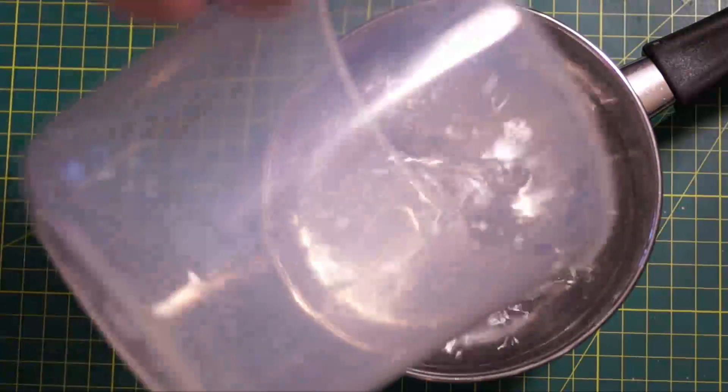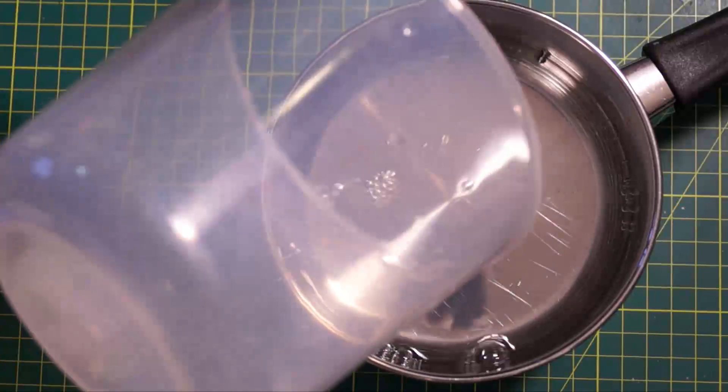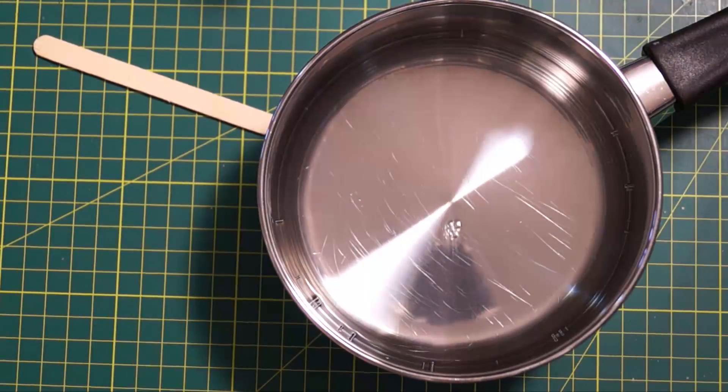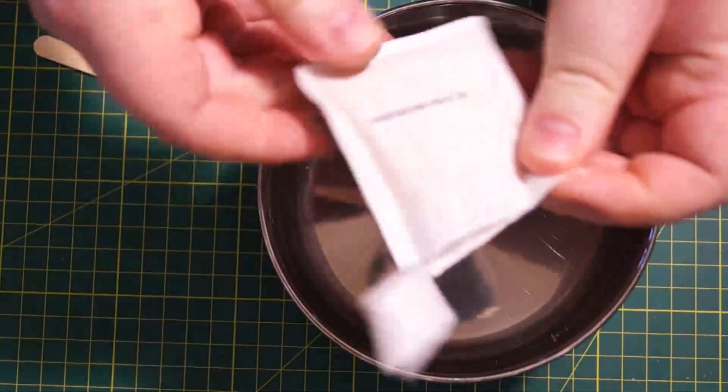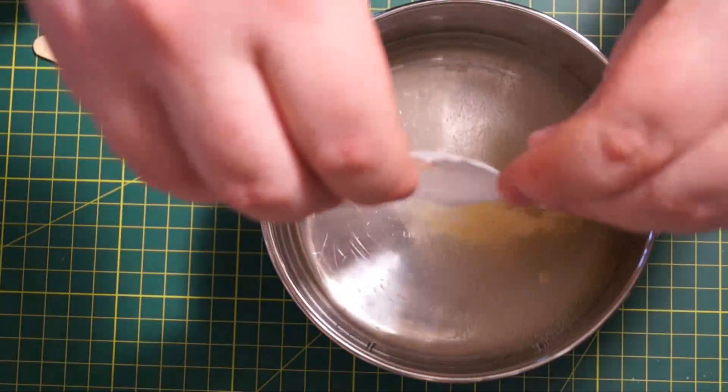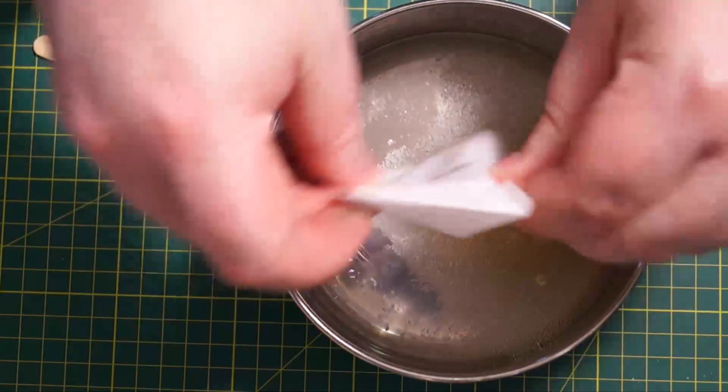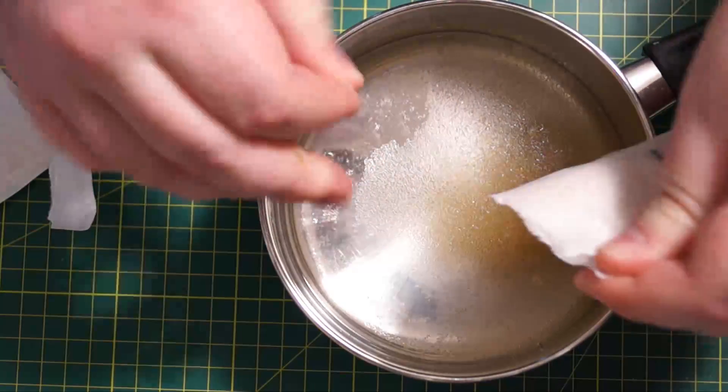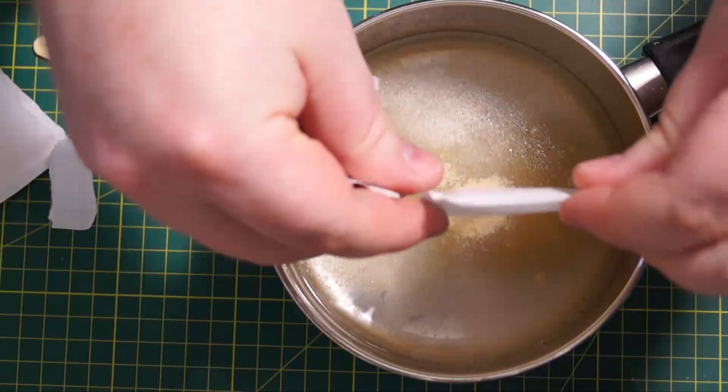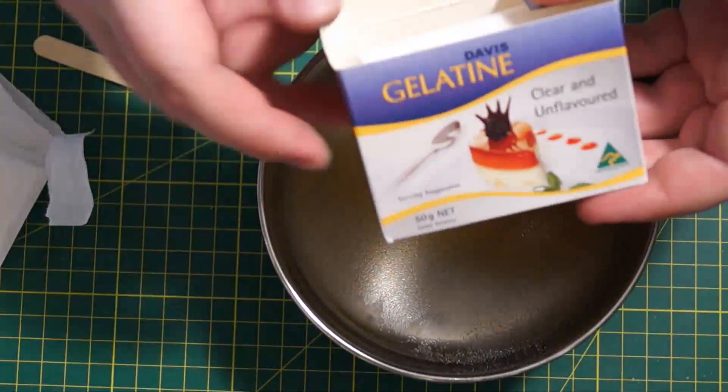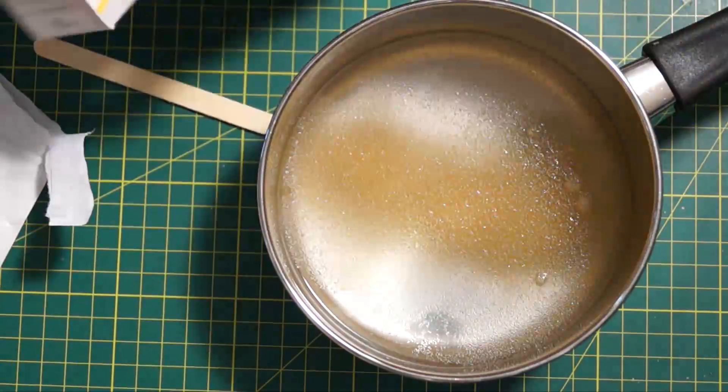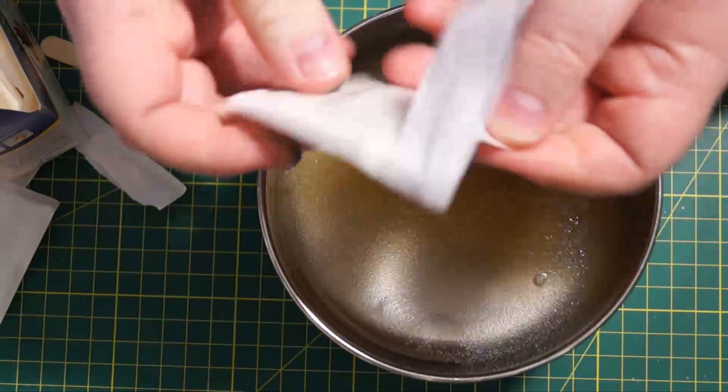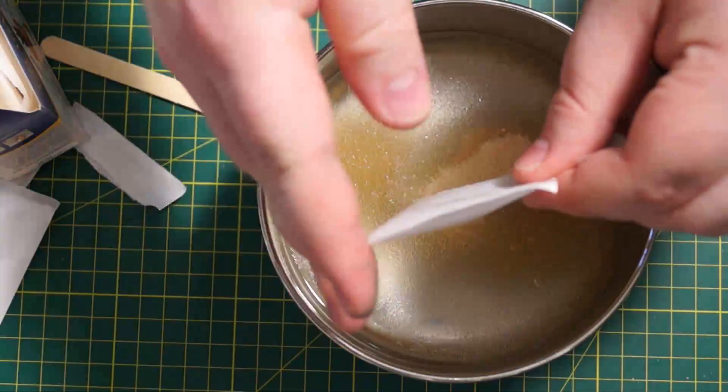So pour the 200 milliliters of water into a saucepan and get a lollipop stick to stir and then start adding the gelatin. So each one of these sachets is 10 grams. So that's 10, this is 20. So you see, always check the box that you buy as to how much there is in grams. You can just divide by the number of sachets to give you an idea of how much each sachet has in it.